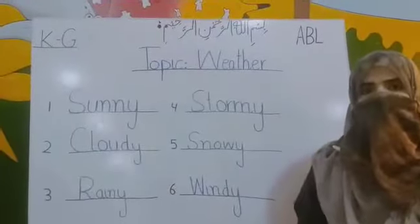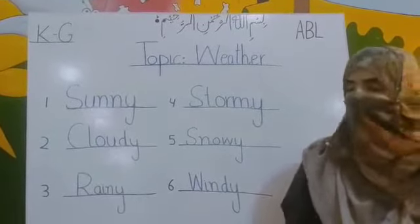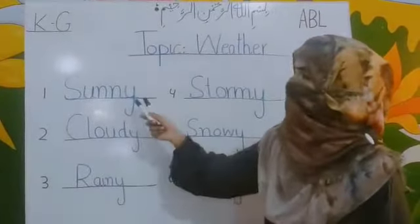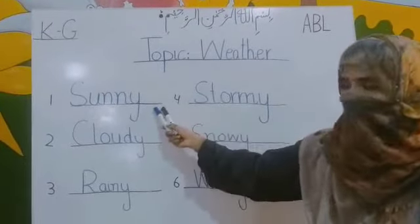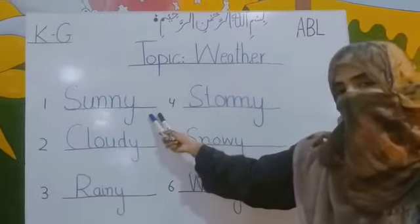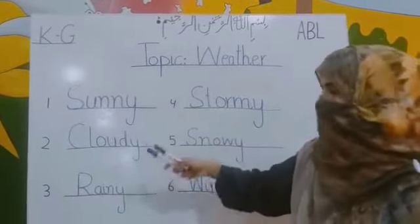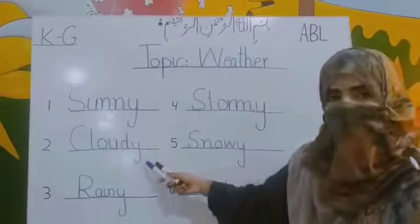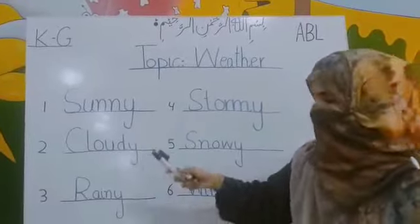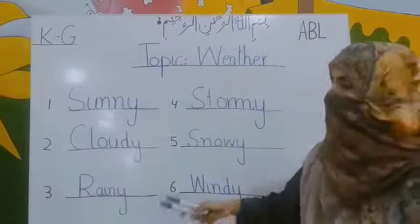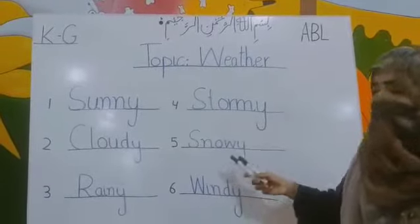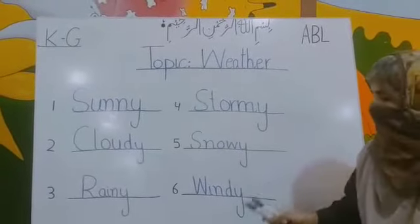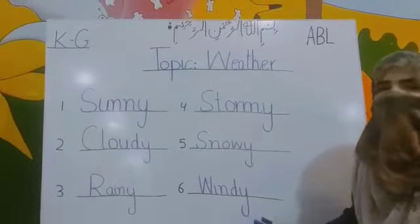So how many weathers have we discussed here? Six. Repeat after me: sunny, cloudy, rainy, stormy, snowy, windy.